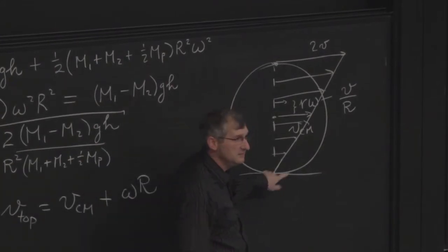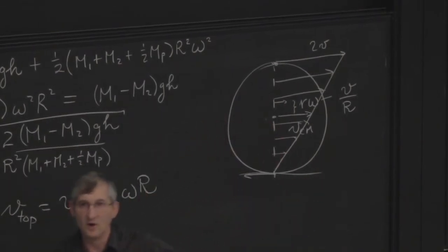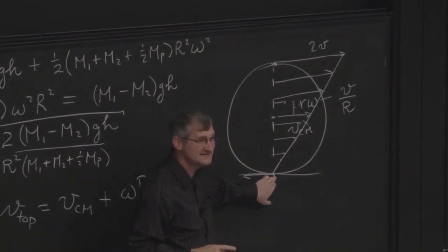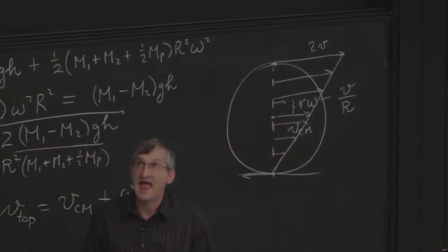So at the bottom, the bottom is moving backwards with respect to the center at omega r. The center is moving to the right at speed v. The bottom is moving to the left at speed v. You add those up and you get at rest.